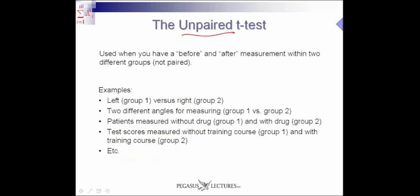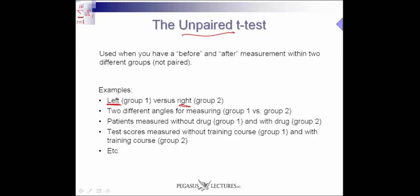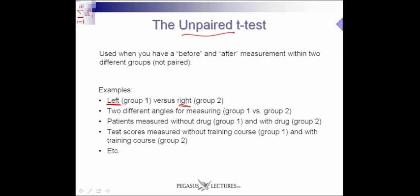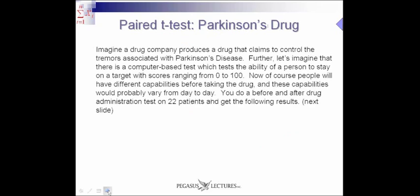An unpaired t-test means that we don't have this coupling or pairing of the data. You use this when you have measurements within two different groups that are not paired. For example, group one measures left, versus group two measures right — not left and right in the same patients. Or we measure two different angles: all angles for group one are the same, and all angles for group two are the same. Or patients measured without a drug in group one, and then with a drug in group two. Or test scores measured without the training course in group one, and then with the training course in group two.